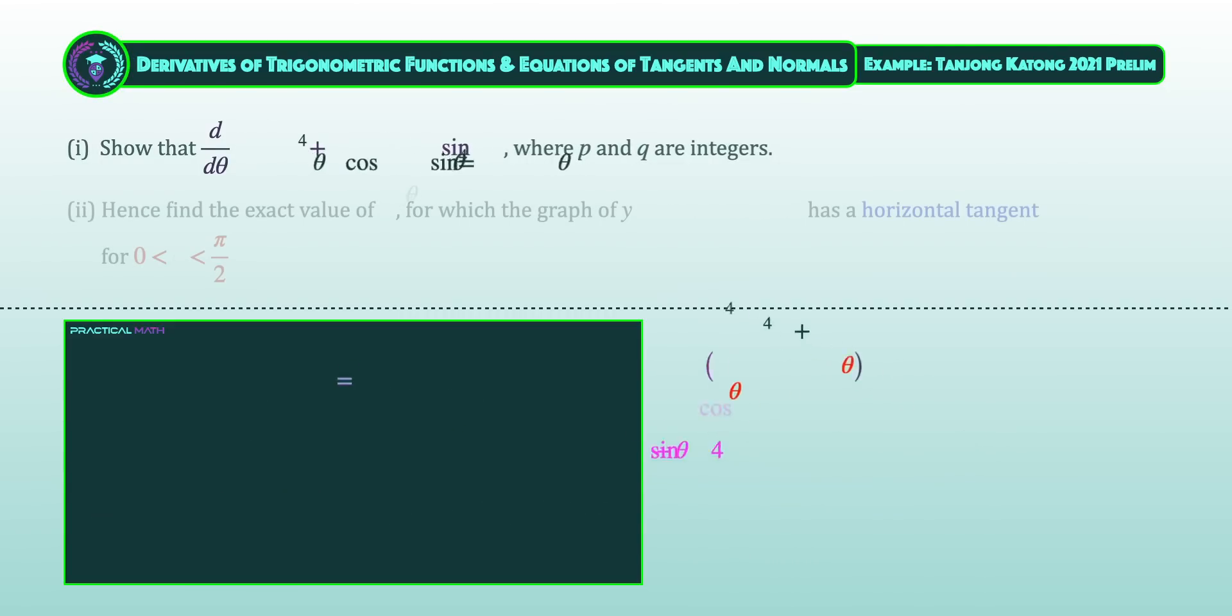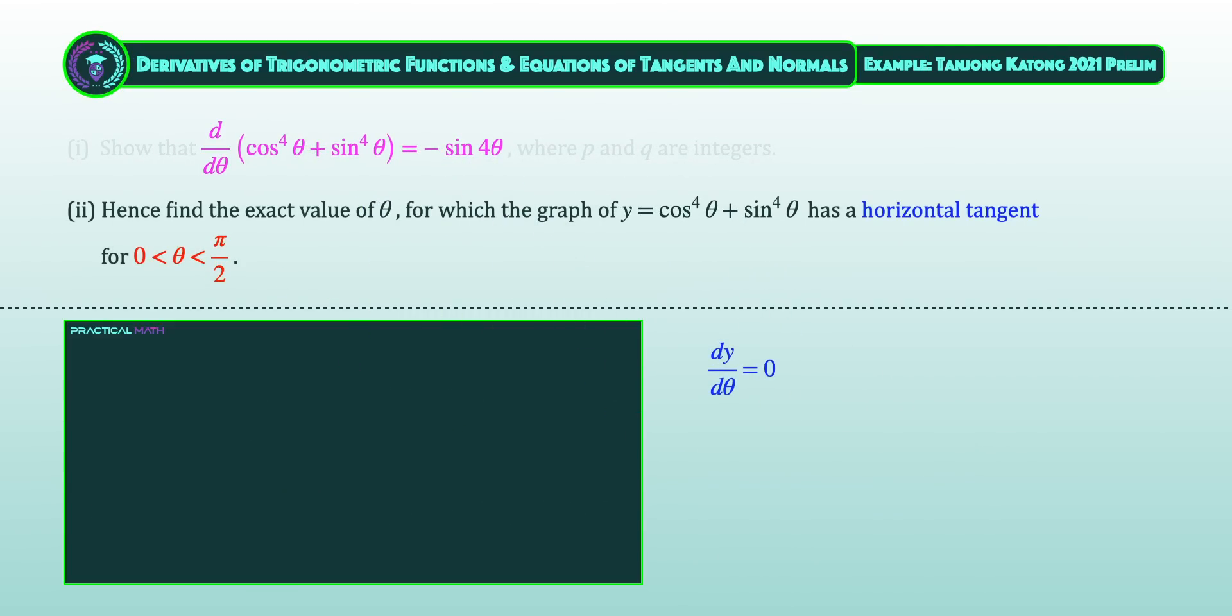A horizontal tangent will have a gradient of 0 and that means we have to set dy/dθ to be equal to 0. We'll now equate the result of negative sin4θ from part 1 to be equal to 0. Since the angle in our equation is 4θ, we'll need to convert the range from θ to 4θ by multiplying 4 to give us a range of 0 to 2π, not inclusive.